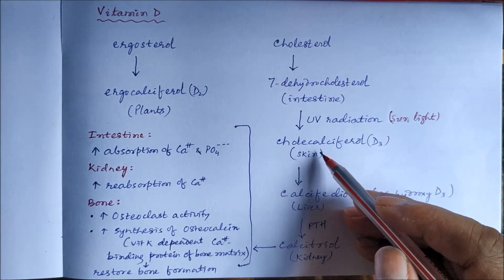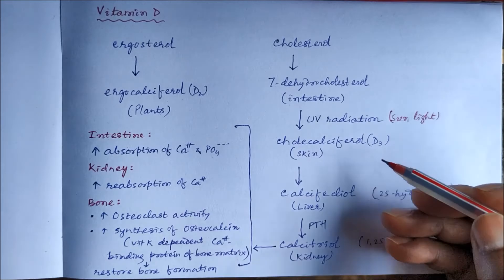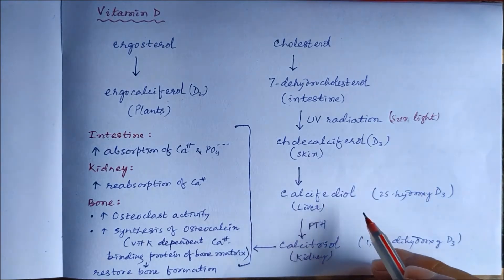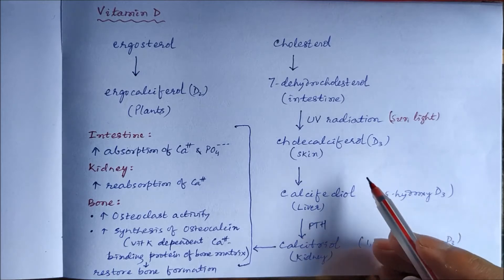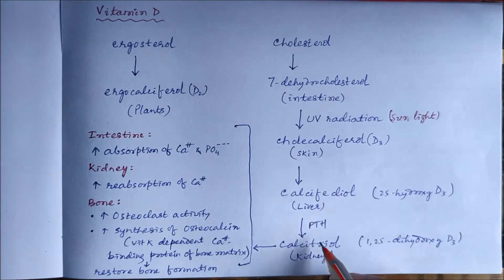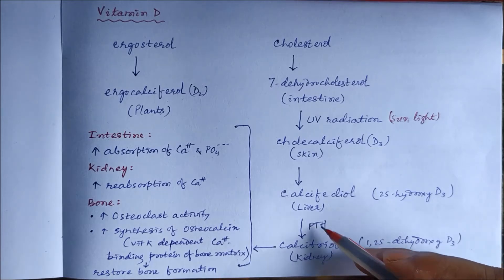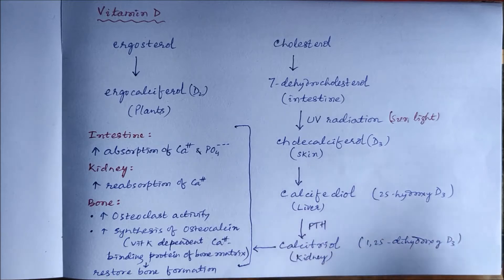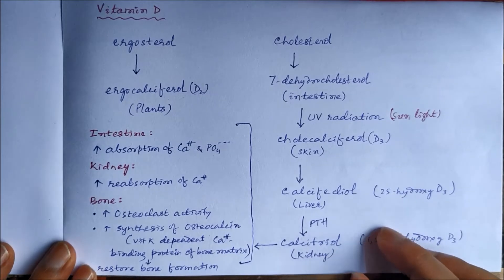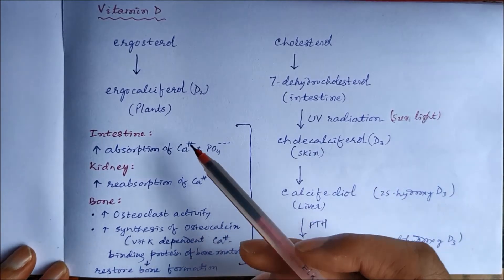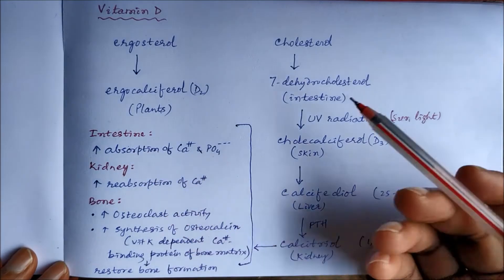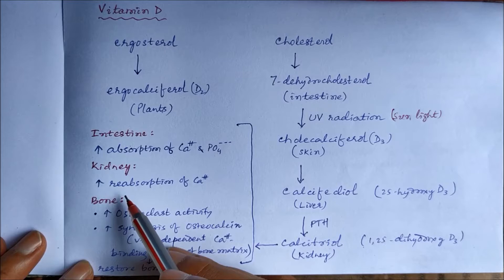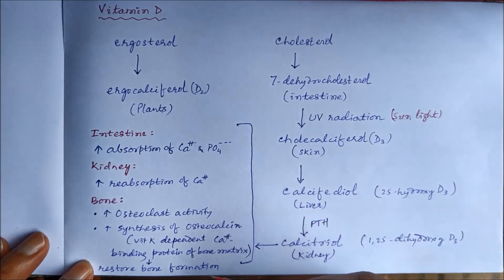First, cholesterol is converted to seven-dehydrocholesterol, then in the presence of sunlight it is converted to cholecalciferol — vitamin D3. In the liver it is converted to 25-hydroxycholecalciferol, or calcifediol. Then in the kidney, in the presence of parathyroid hormone, it is converted to 1,25-dihydroxycholecalciferol, or calcitriol — the active form.